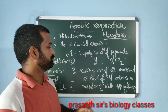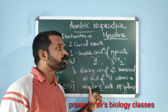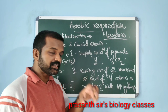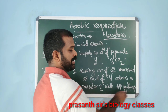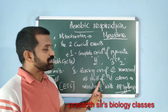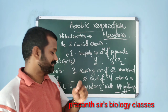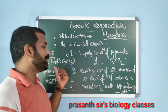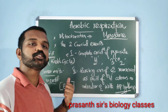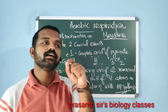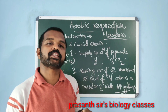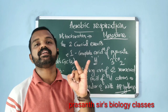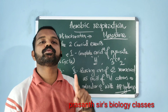The second event is the passing on of electrons, removed as part of hydrogen atoms, to molecular oxygen with the simultaneous synthesis of ATP. This event is also known as the electron transport system, and it takes place in the inner mitochondrial membrane. So the two crucial events: one takes place in the mitochondrial matrix, the second in the inner mitochondrial membrane.